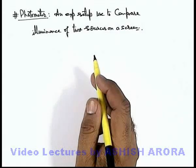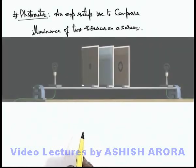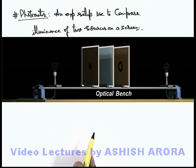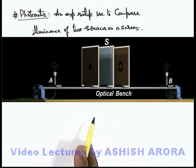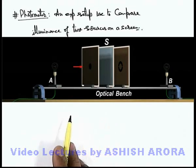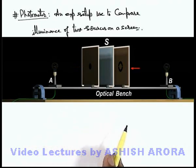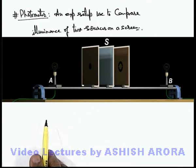To understand a photometer, let us consider a realistic example. Here we can see an optical bench on which there are 2 sources A and B placed on the 2 sides of screen S. On the 2 sides of the screen, 2 boards are also placed. On the left side board there is a circular cut, and on the right side board there is an annular ring-shaped cut.